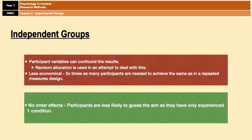On the upside, there are no order effects in independent groups because participants only experience one condition, so their performance isn't impacted in a second condition. Also, participants are less likely to guess the aim of the experiment because they've only experienced one condition, which means demand characteristics are reduced — though importantly, not eliminated, only reduced.